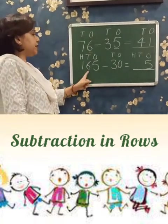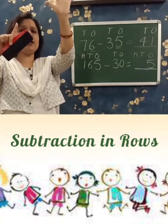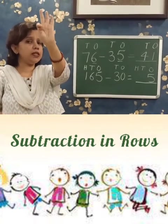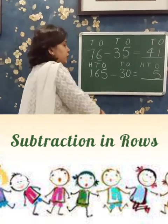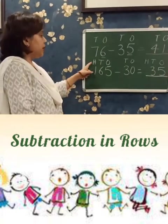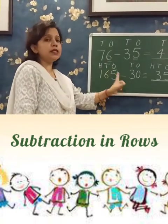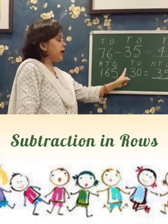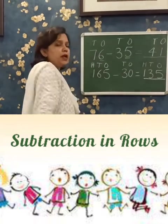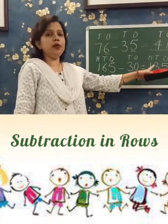10's: 6 minus 3. Count: 1, 2, 3. What is left? 3. So in the 10's place it is 3. 100's it is 1. Here in 30 there is no number in the 100's. So 1 minus no number is 1 in the 100's place. The difference is 135.